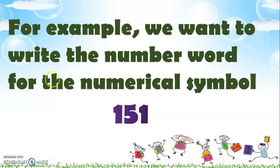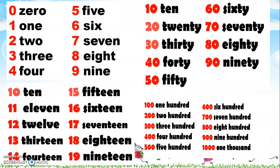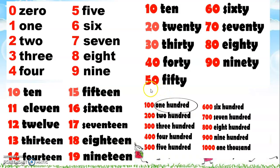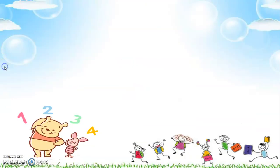For example, we want to write the number word for the numerical symbol one hundred fifty-one. We go back to our number chart and look for the number word for one hundred — that's how you spell one hundred. Then the number word for fifty, which is here. And the last one is one. So we have one hundred fifty-one.